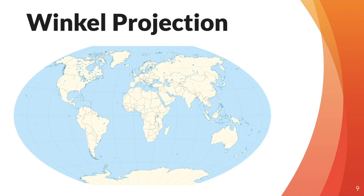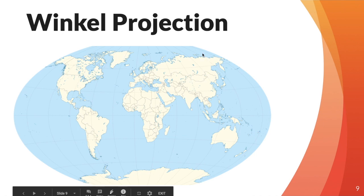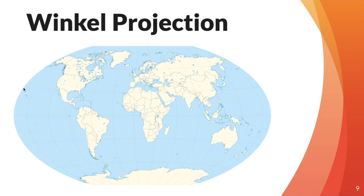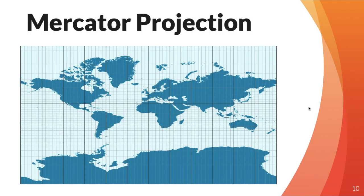There are different projections that people have come up with to give us the best image of what the Earth looks like on a flat surface. The Winkel projection keeps the north and south flat but has rounded outer edges, with meridians that become more bowed as we move left or right. The Mercator projection keeps a perfectly rectangular shape, but Antarctica looks very large, and Greenland looks huge in comparison to South America or Africa — which we know is inaccurate. So the Mercator projection is not so great.